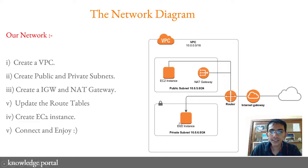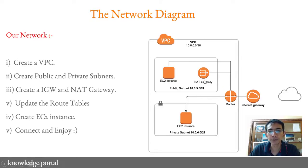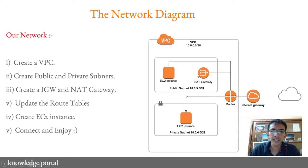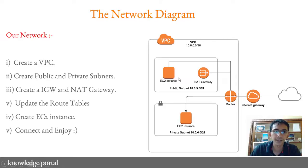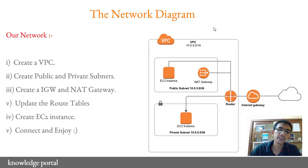In each subnet, we will create one EC2 instance, and along with that we will be creating a NAT gateway. The reason we create a NAT gateway is because the EC2 instance in the private subnet will not be able to contact the internet. We will also create an internet gateway attached to the public subnet so that we can connect to the EC2 instance there. This is a very simple network design that we will be implementing in the US East 1 region.